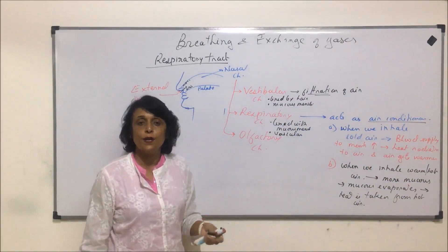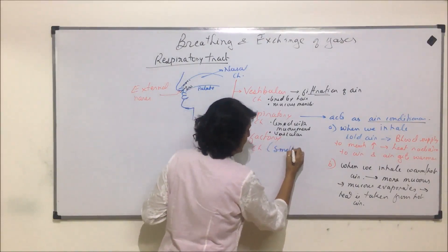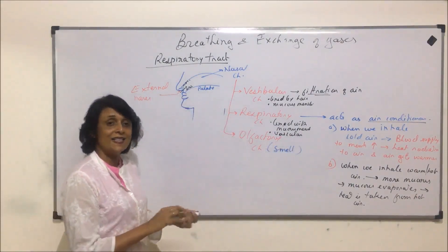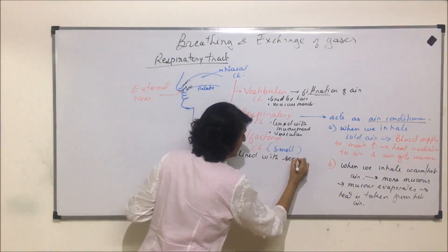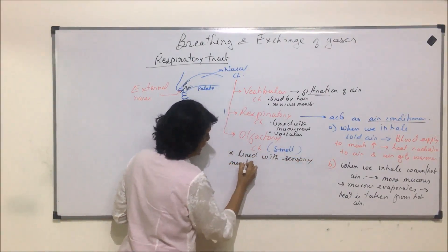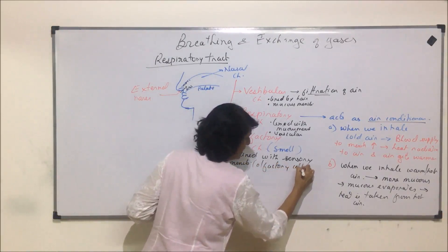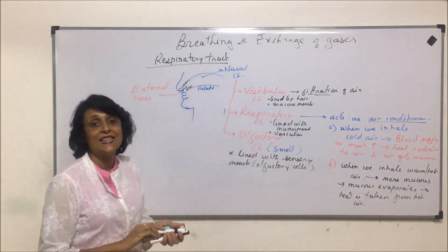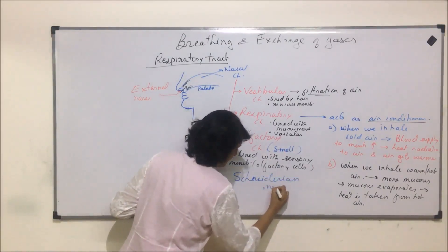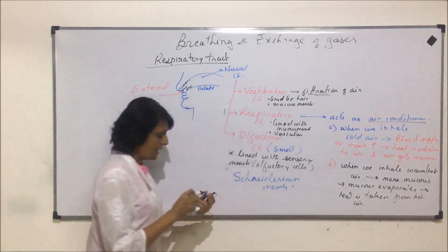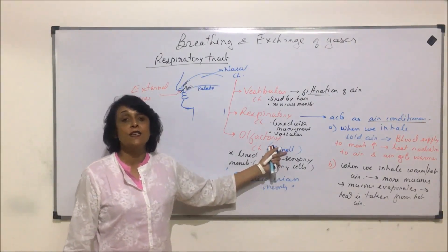The third chamber is the olfactory chamber. As the name suggests, it is responsible for the sense of smell. It is lined with a sensory membrane that has olfactory cells. The name of this membrane is the nidarian membrane, also known as the olfactory membrane, and it is responsible for perception of the sense of smell.